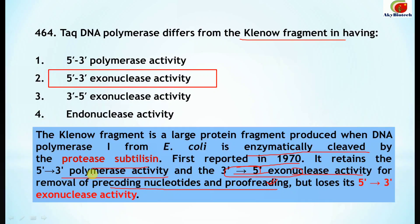The Klenow fragment retains the 5 prime to 3 prime polymerase activity, but what it loses — when it is enzymatically cleaved by protease subtilisin — is the 5 prime to 3 prime exonuclease activity. So this is the correct option.